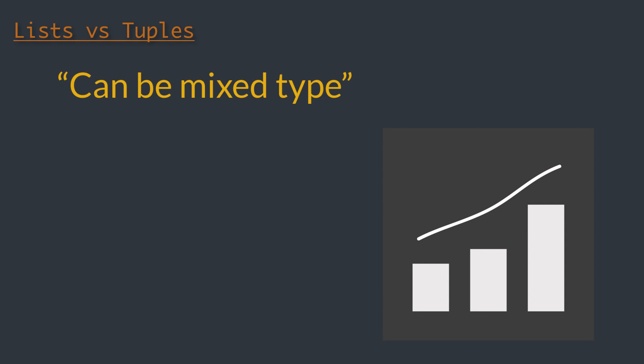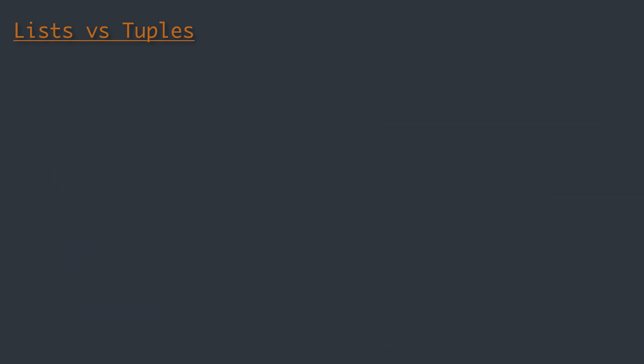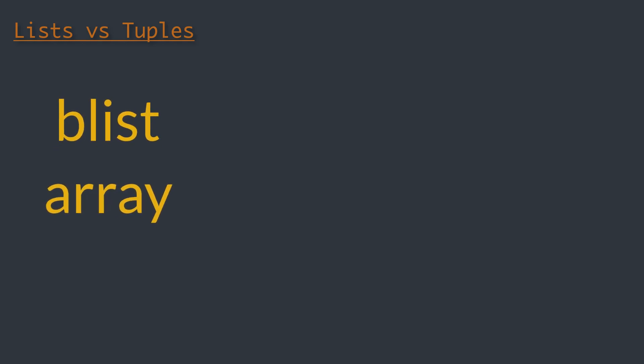These overheads can be removed if we force all of our data to be of the same type. In our upcoming videos we will talk about reducing both memory usage and computational overhead by using the NumPy library. In addition, other packages like blist and array can also reduce these overheads for non-numerical situations. This leads to a major point in performance programming: generic code will be much slower than code specifically designed to solve a particular problem.